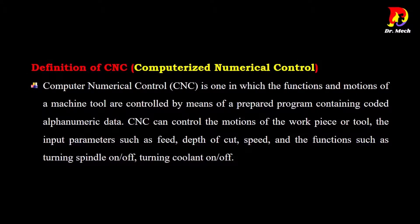Definition of CNC — Computerized Numerical Control. Computer Numerical Control, CNC, is one in which the functions and motions of a machine tool are controlled by means of a prepared program containing coded alphanumeric data.